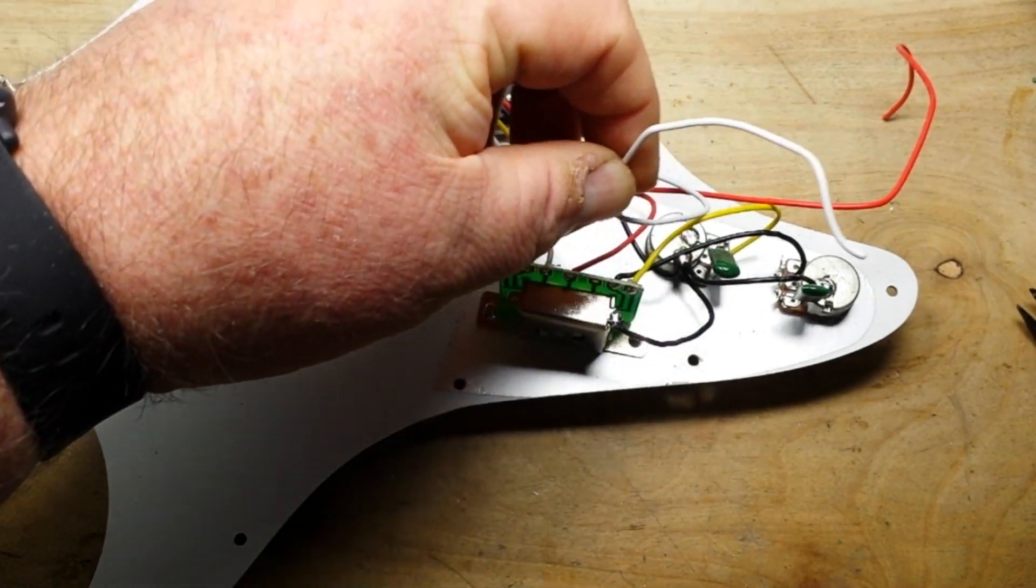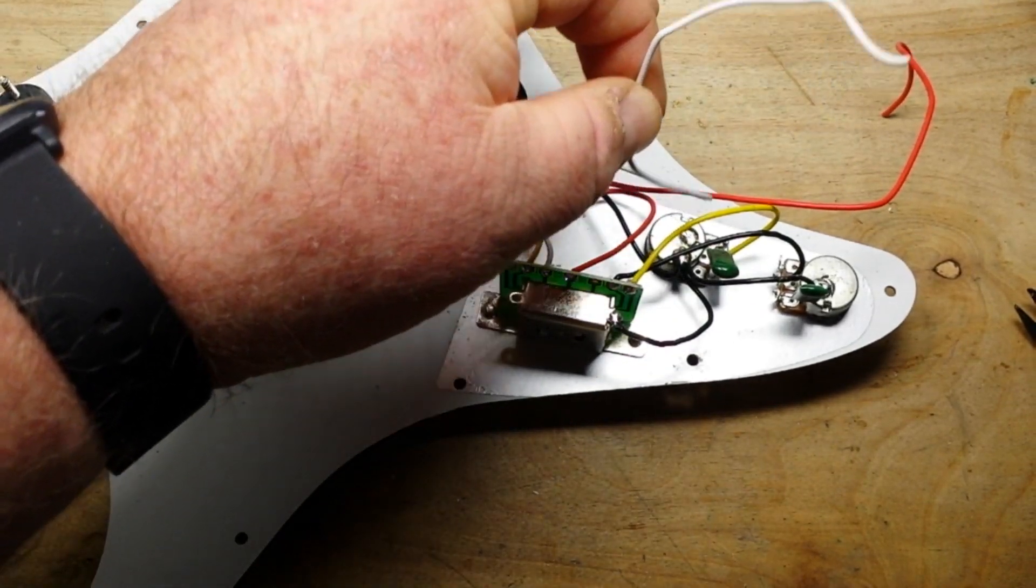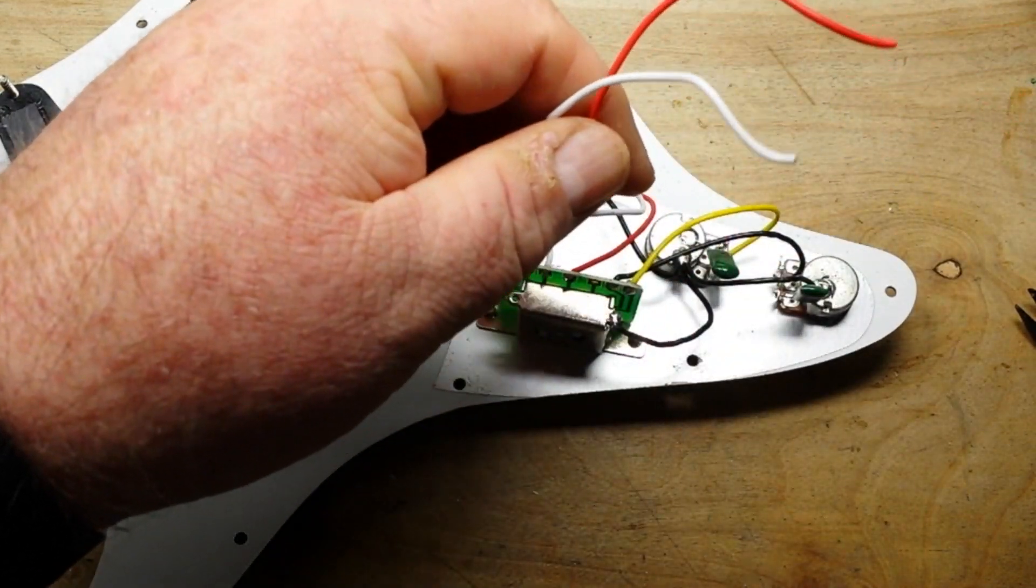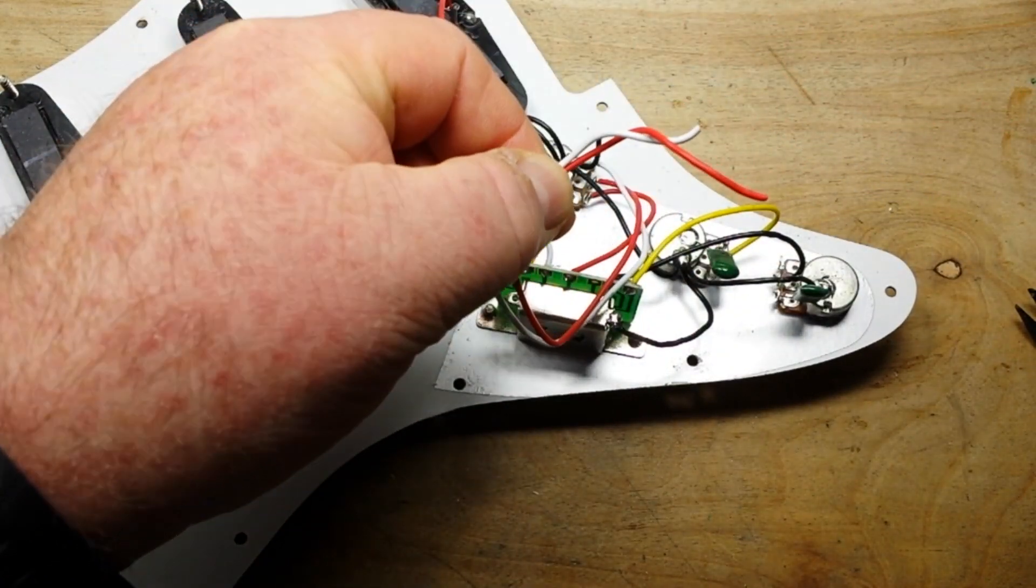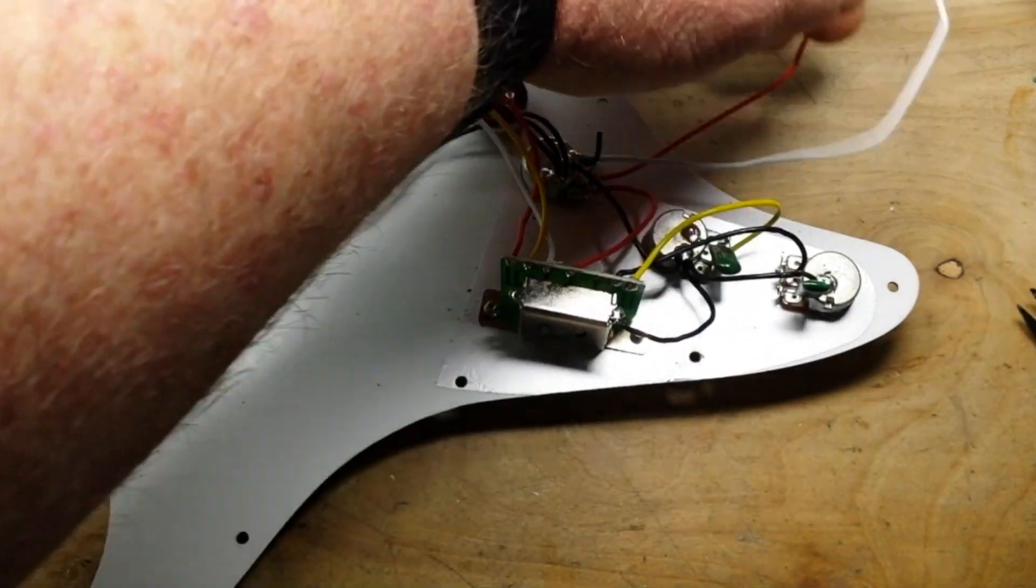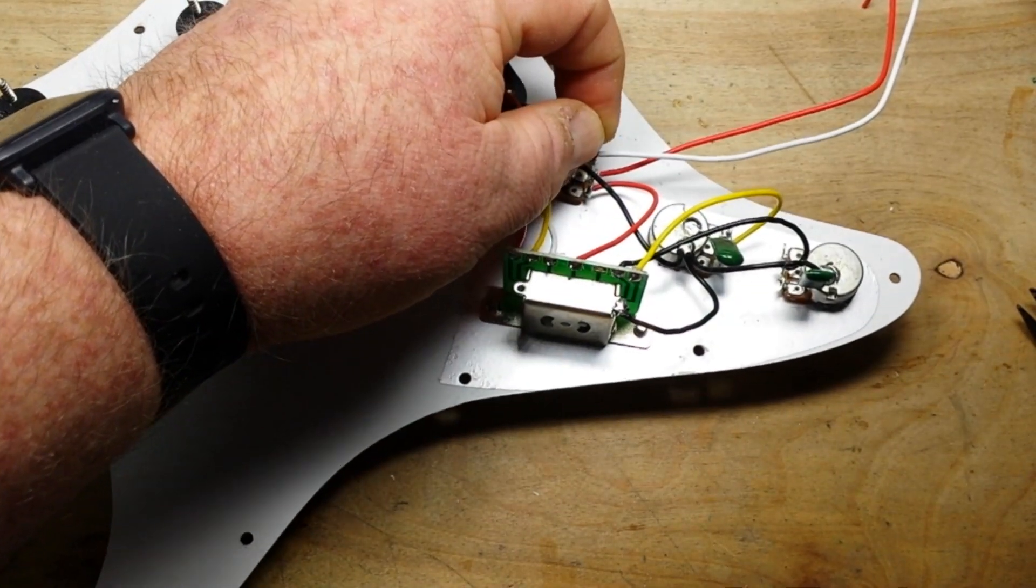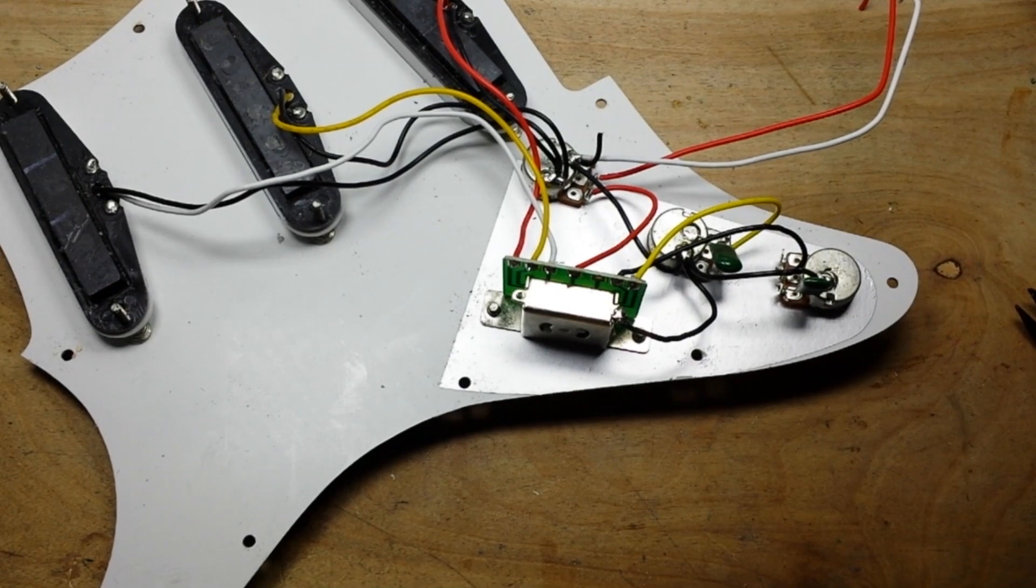And for some odd reason this white wire is also a ground. This white and this red, this ground and this hot, go to the output jack of the guitar. This ground wire here goes to the spring claw in the tremolo.